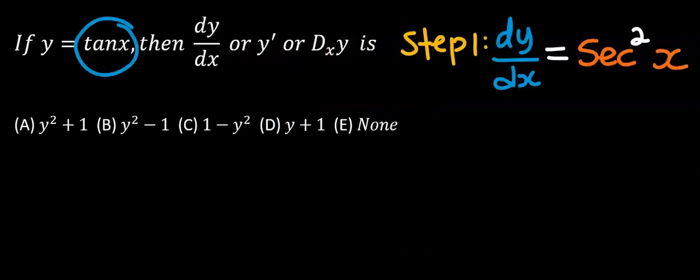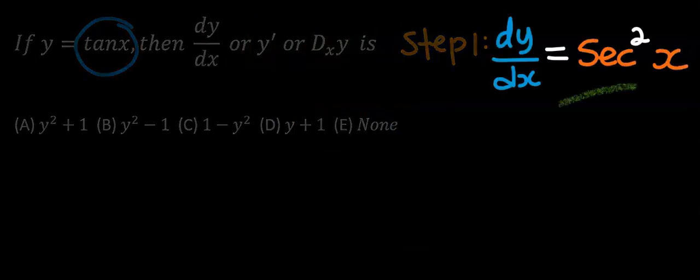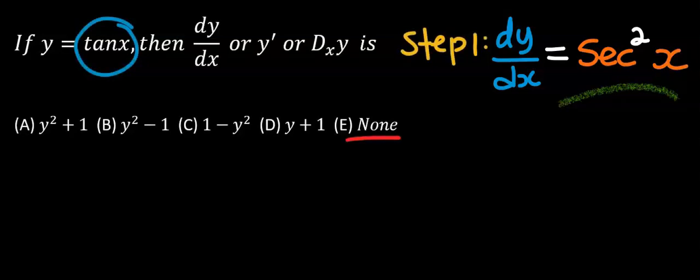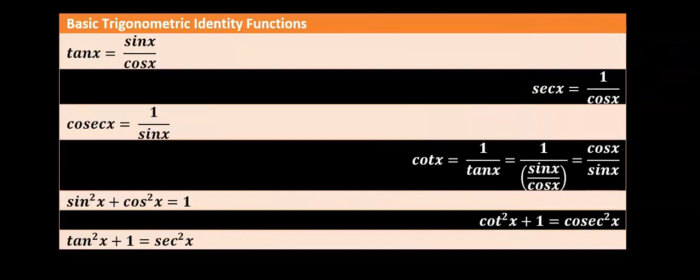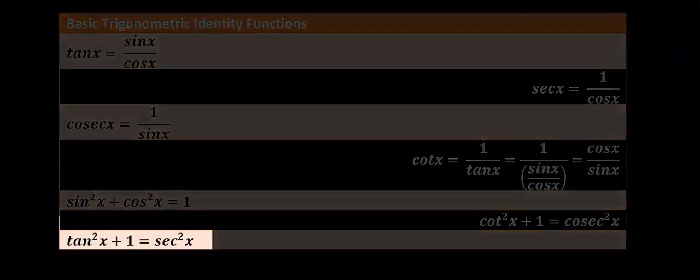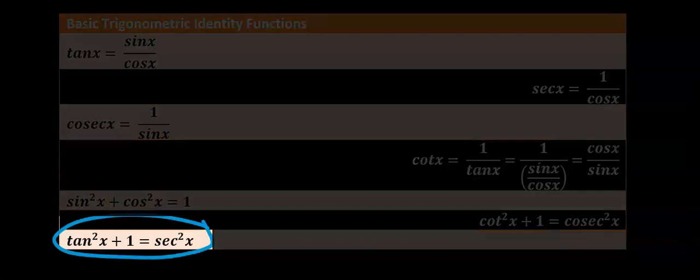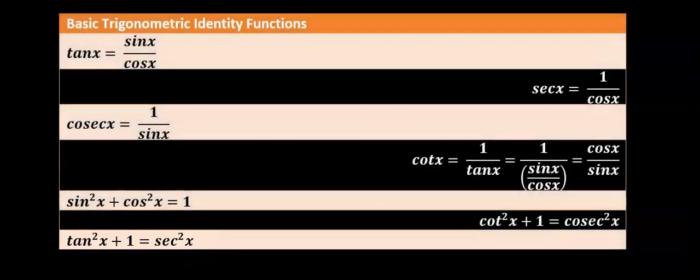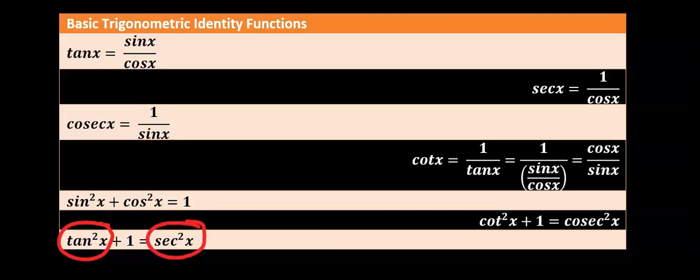Hence dy/dx is sec²x. You might probably want to choose none, however from basic trigonometric identity functions, tan²x + 1 is equal to sec²x. We are choosing this because the question has tan x in it and the derivative gave us sec²x. I'm going to write tan²x + 1.